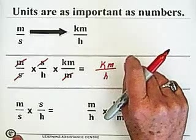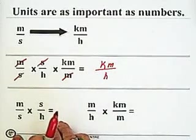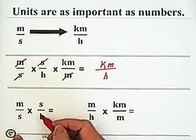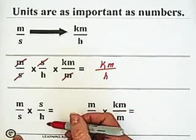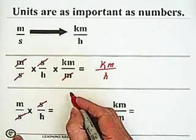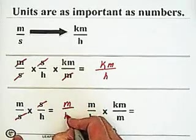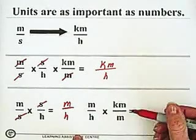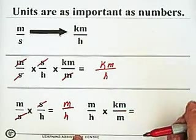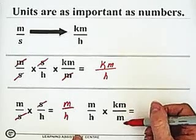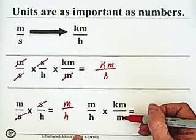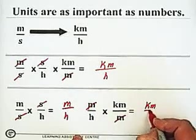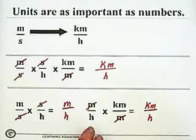We can do it in one step, or there's nothing wrong with doing it in two steps. We can start with our meters per second, multiply it by the conversion factor for seconds per hour — our seconds cancel and we're left with meters per hour. Then we multiply by the conversion factor of kilometers per meter. We know one kilometer is a thousand meters, so our meters cancel and we're left with the final units of kilometers per hour.